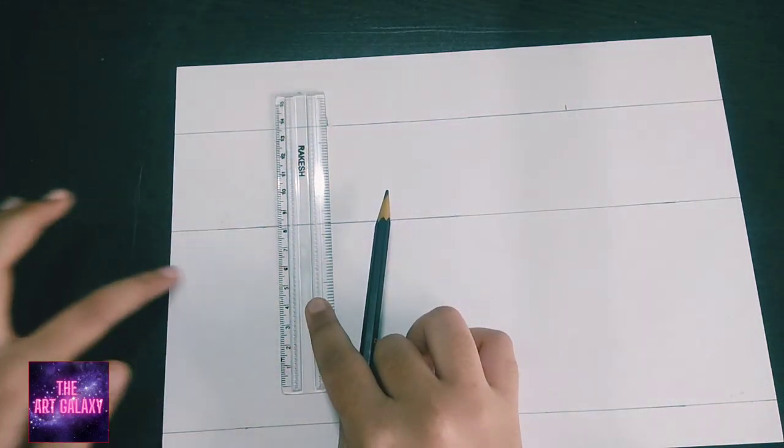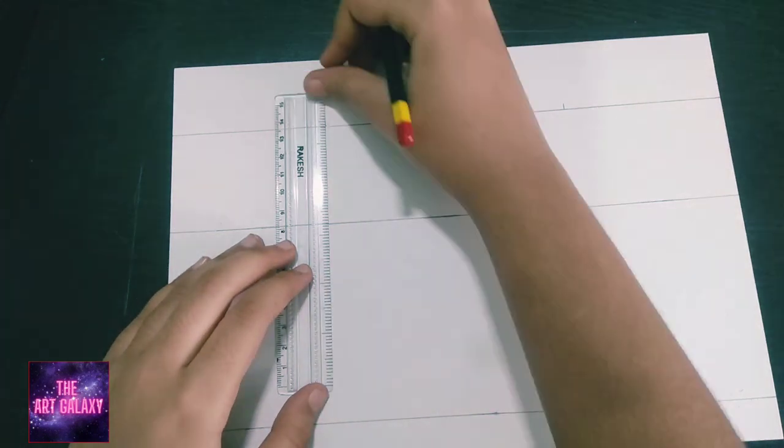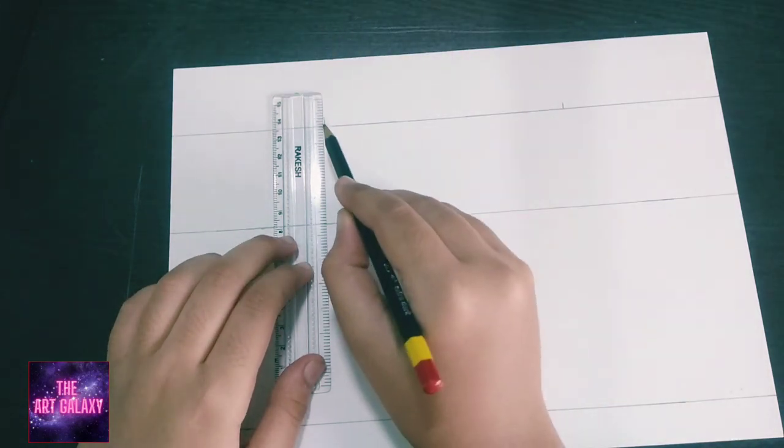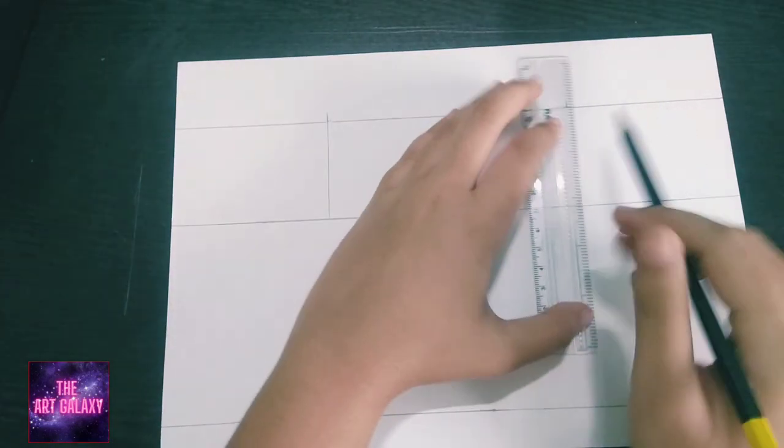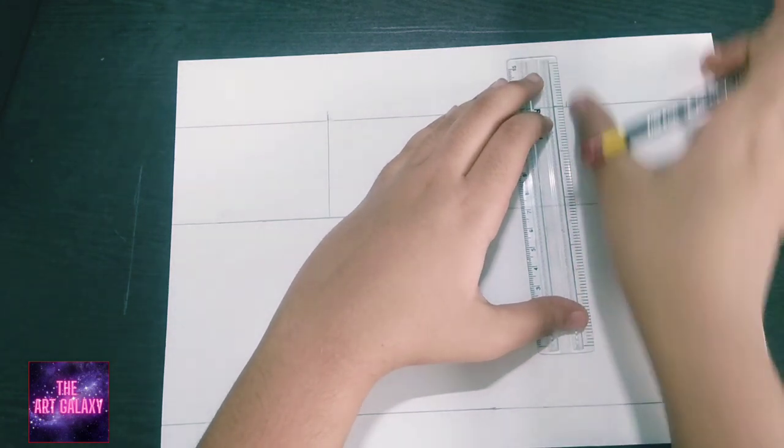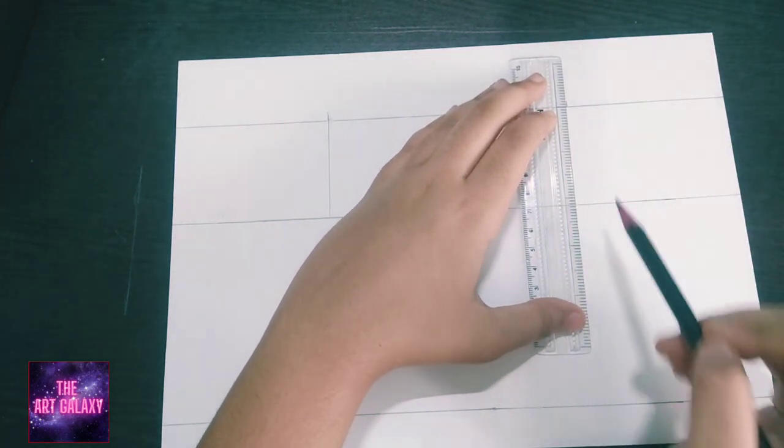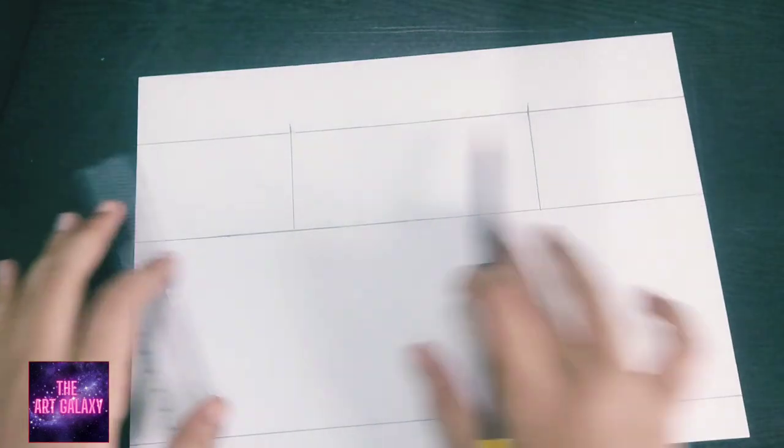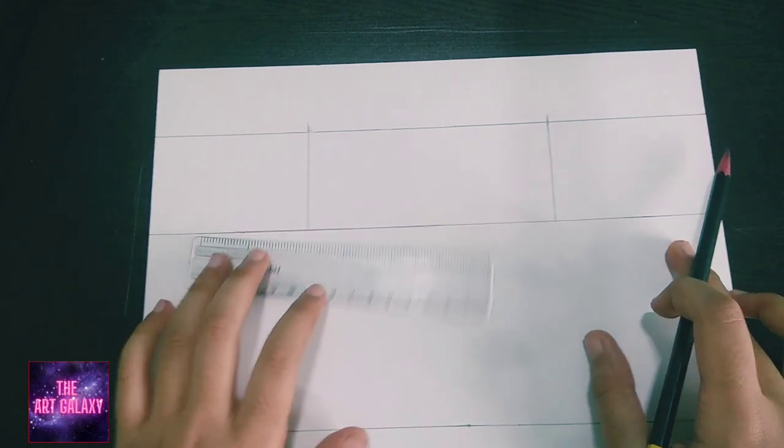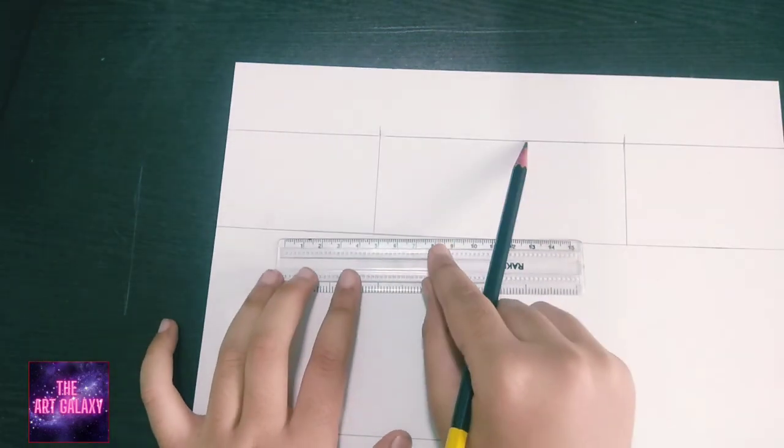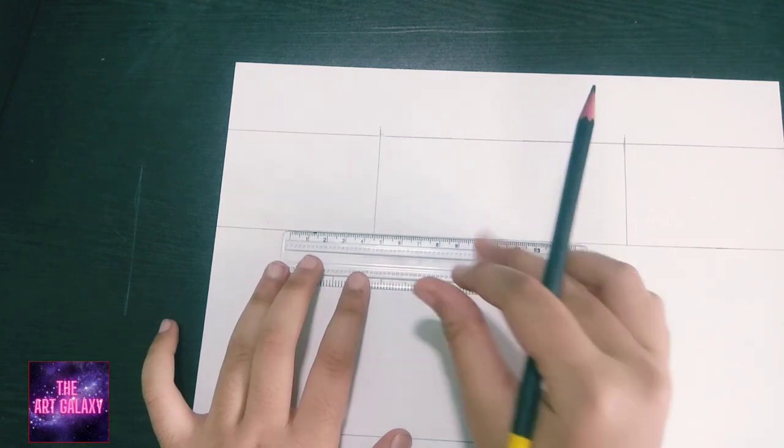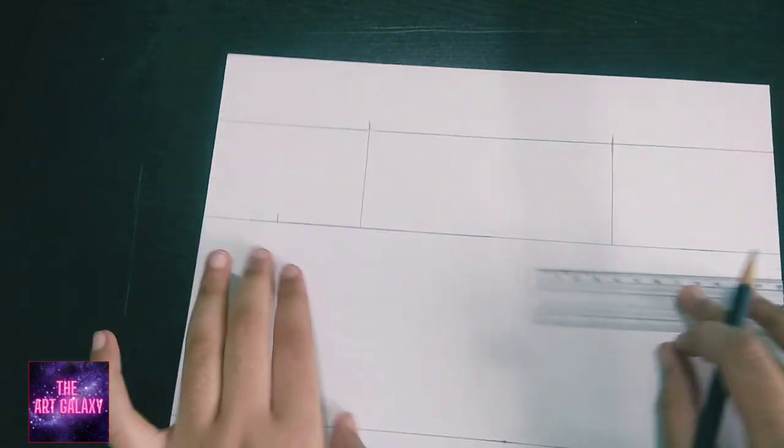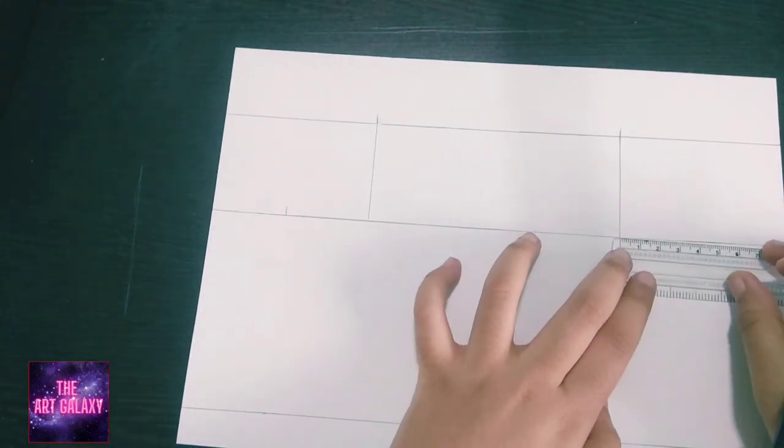Now just draw a straight line from the 8.5 centimeter mark which we have drawn earlier. Make sure your line is quite straight. Repeat this step for the other 8.5 centimeter mark. Now we have to mark a distance of 4.5 centimeters from the point. Repeat this step on the other side as well.